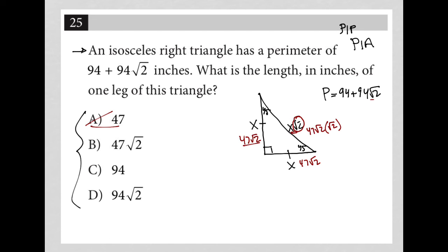When I add 47 square root 2 plus 47 square root 2, I get 94 square root 2. That matches that part. And then when I multiply 47 root 2 times root 2, I actually get 47 times 2, which is 94.